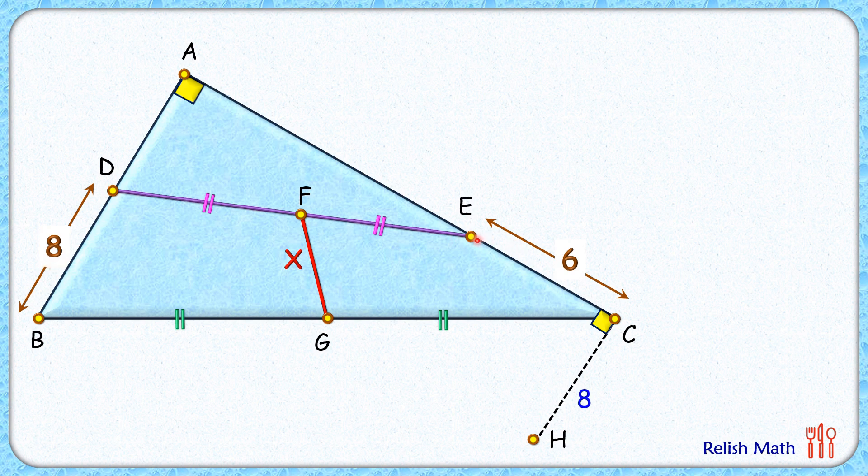Let's join EH. Now in this right angle triangle, if we apply Pythagoras theorem, we'll get EH length as 10 centimeter. Now let's join DG and HG.